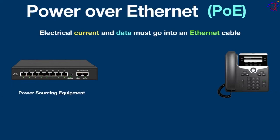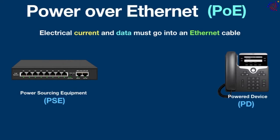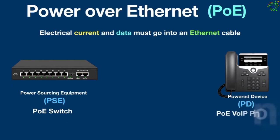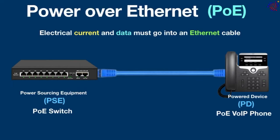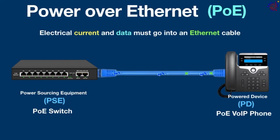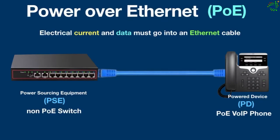For Power over Ethernet to work, electrical current and data must go into an ethernet cable connected to a Power Sourcing Equipment, or PSE. What PSE does is supply DC power and data to a Power Device, or PD, through a twisted pair ethernet cable. In this scenario, the PSE is a PoE switch and the power device is a VoIP phone. When we plug an ethernet cable into the switch, it starts sending data and power to the phone, so the phone doesn't need a separate power supply.